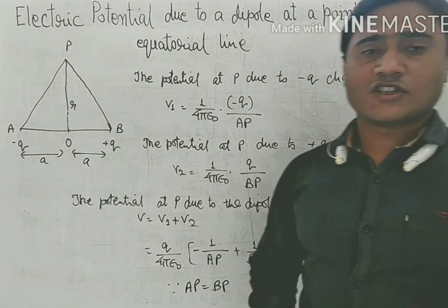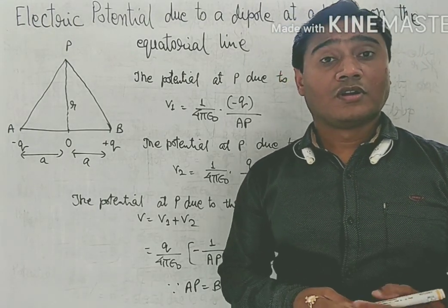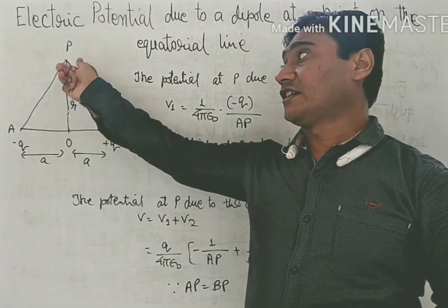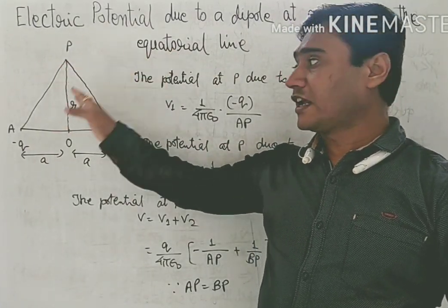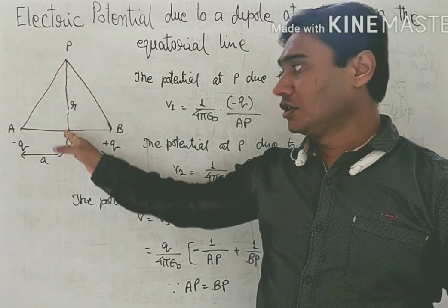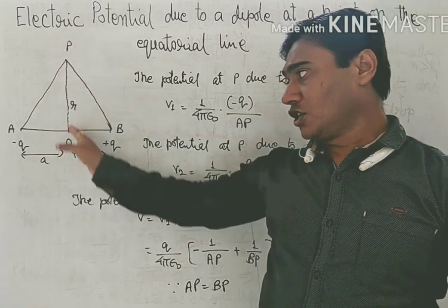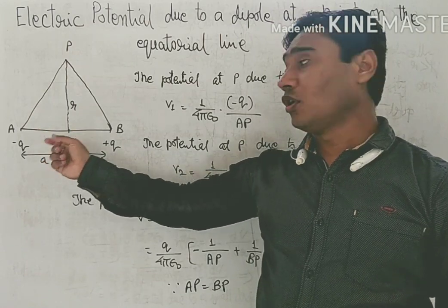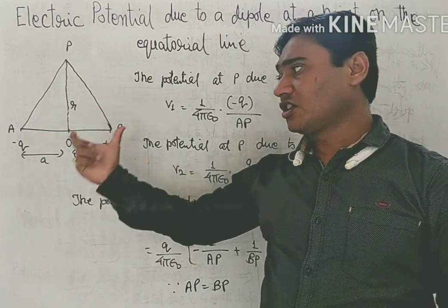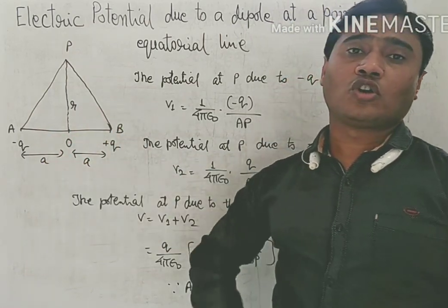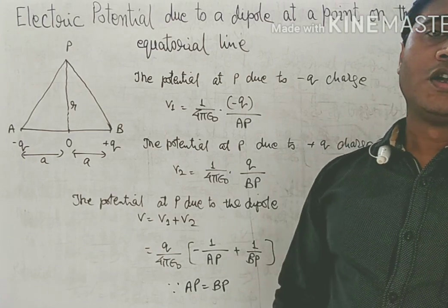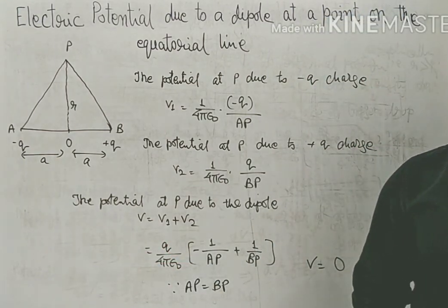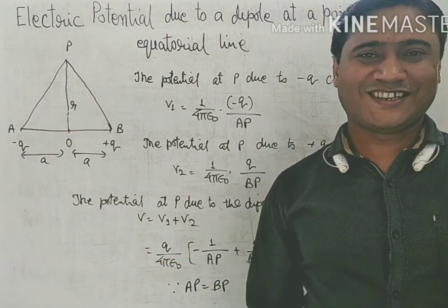Remember: at any point on the equatorial position or perpendicular bisector of a dipole, the electric potential due to the dipole will always be zero. This is the end of today's session. Do like and subscribe to this channel.